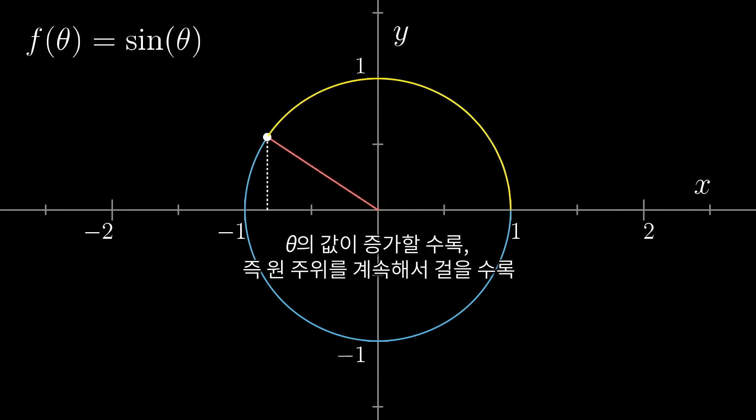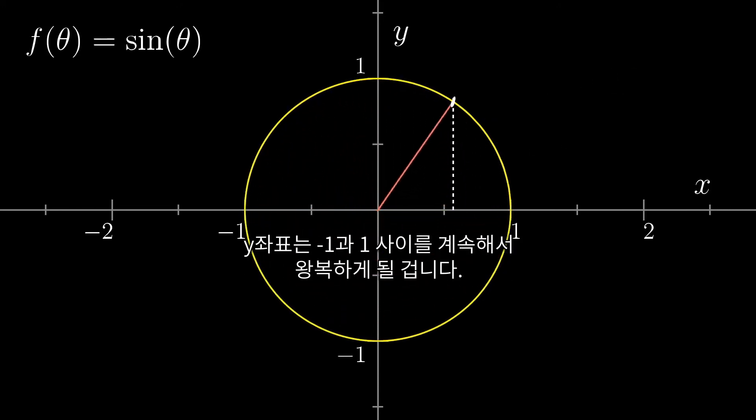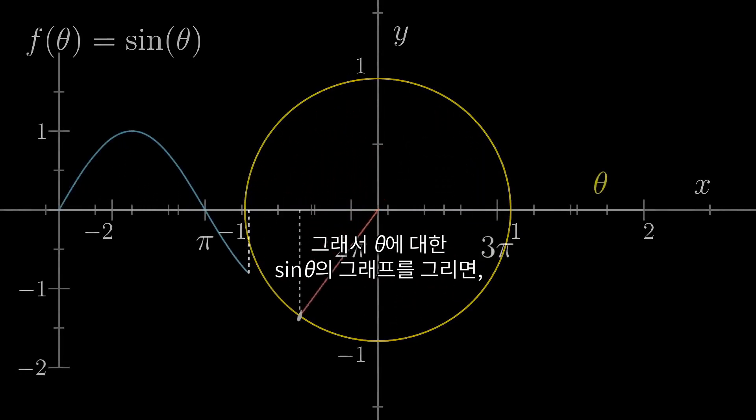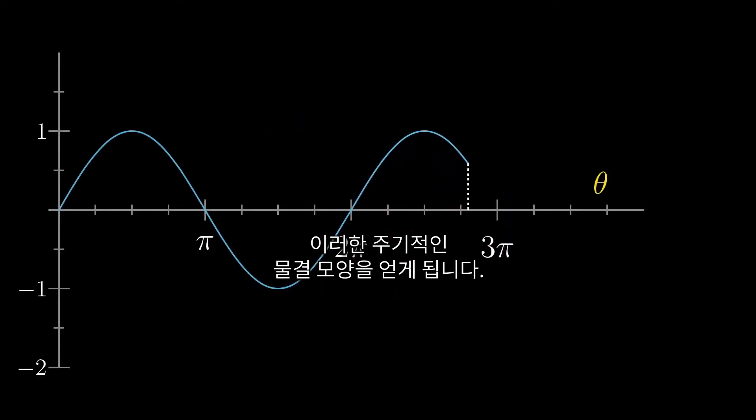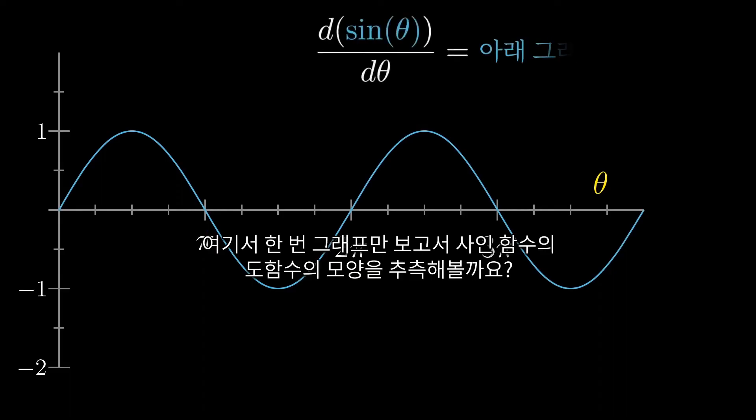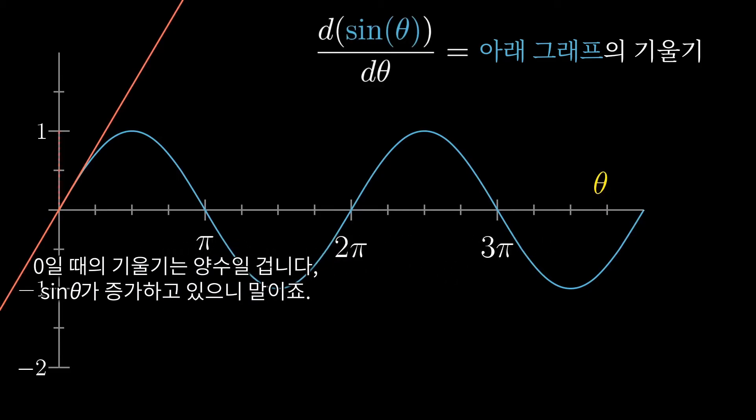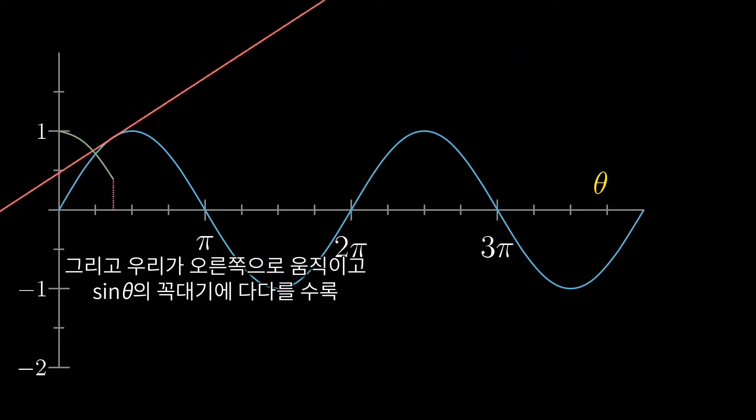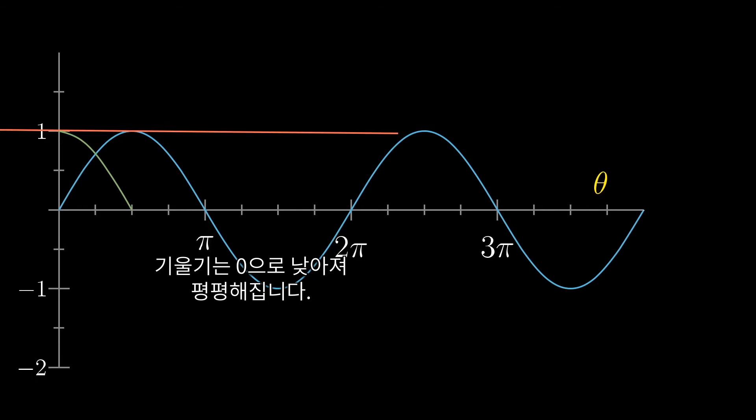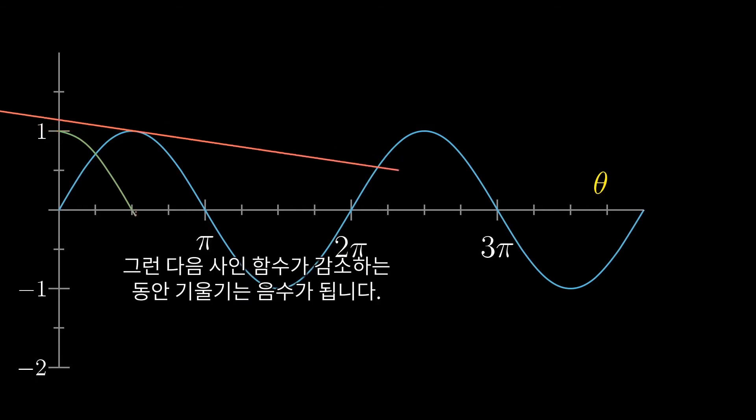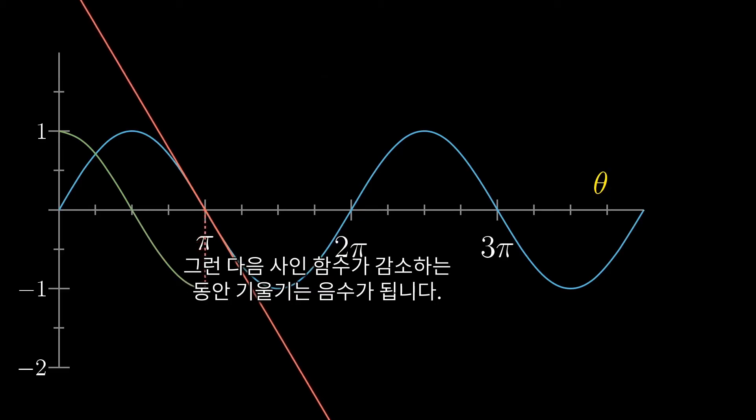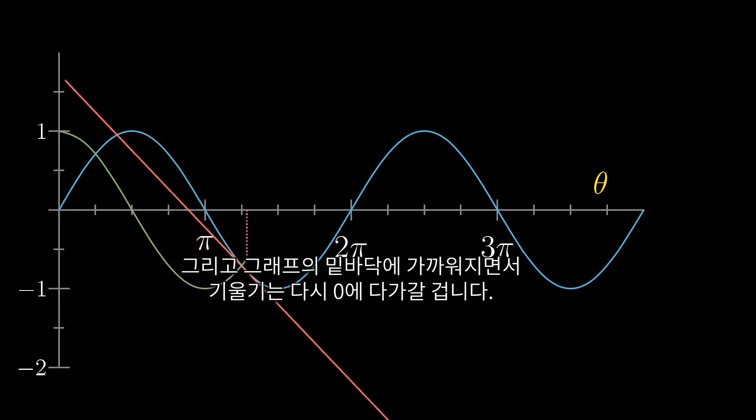Then what sine of theta means is the height of that point above the x axis. And as your theta value increases and you walk around this circle, your height bobs up and down between negative 1 and 1. So when you graph sine of theta versus theta, you get this wave pattern, the quintessential wave pattern. And just from looking at this graph, we can start to get a feel for the shape of the derivative of the sine. The slope at 0 is something positive, since sine of theta is increasing there. And as we move to the right and sine of theta approaches its peak, that slope goes down to 0. Then the slope is negative for a little while, while the sine is decreasing, before coming back up to 0 as the sine graph levels out.